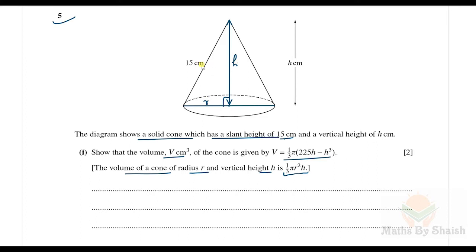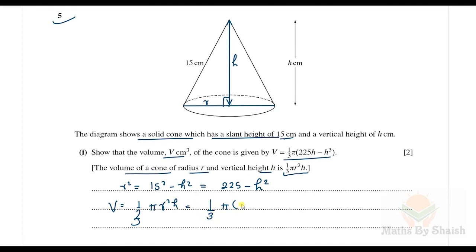By using the Pythagorean theorem we can find r in terms of h. From Pythagoras: r² = 15² − h² = 225 − h². Once we have r², the volume V = (1/3)π r² h becomes V = (1/3)π(225 − h²)h, which gives V = (1/3)π(225h − h³). That is what we needed to show.